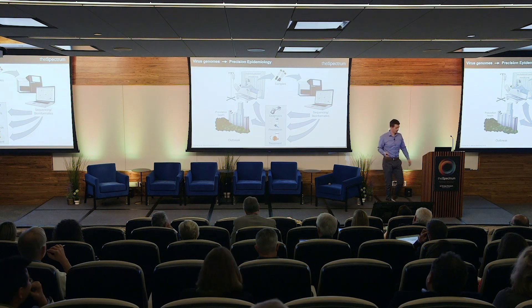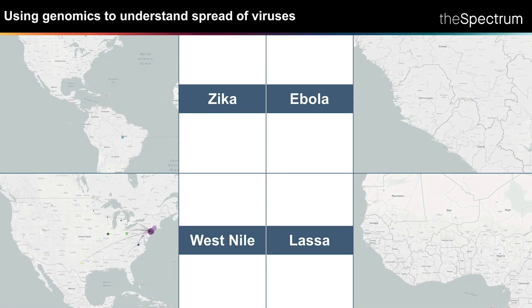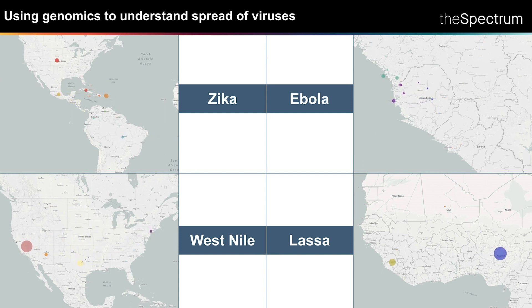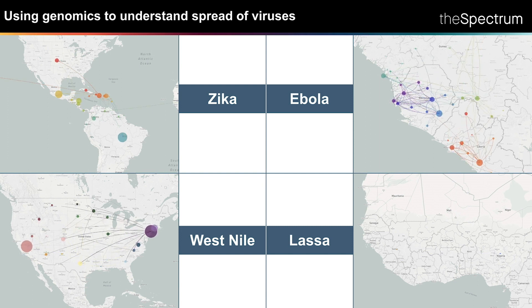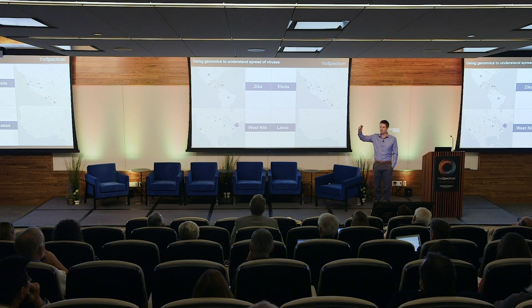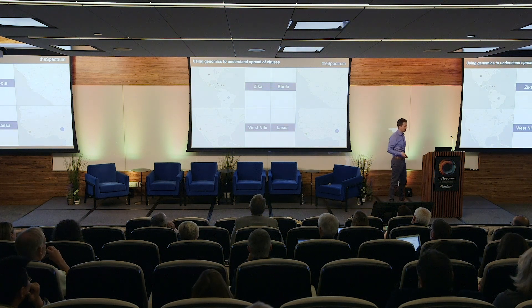Just to talk about the spread part: we can animate this over time, and I'm showing you how we have done this for the four viruses I mentioned — Zika showing the epidemic in the Americas, Ebola in West Africa, Lassa in West Africa, and West Nile here in the United States. The information that goes into making these animations is just a virus genome, a time, and a place where we captured that viral genome, and from that we can completely reconstruct exactly how these viruses are spreading over geographical areas through time.